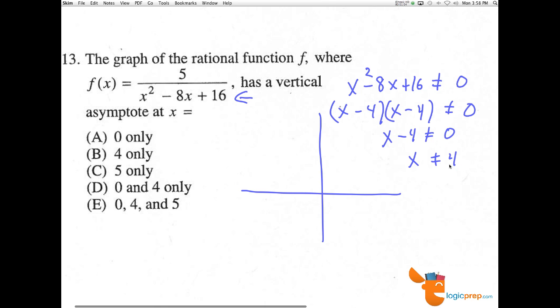So 4 is the only vertical asymptote for this particular problem. Okay? All right. You go. Thank you.